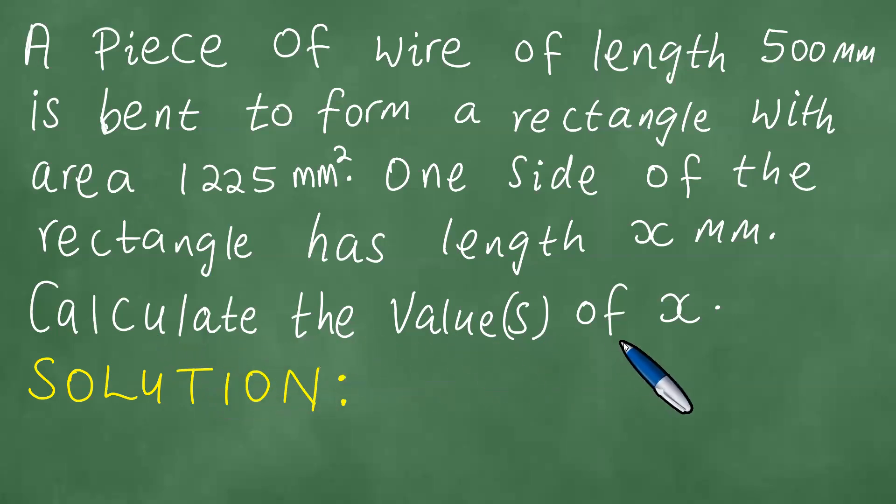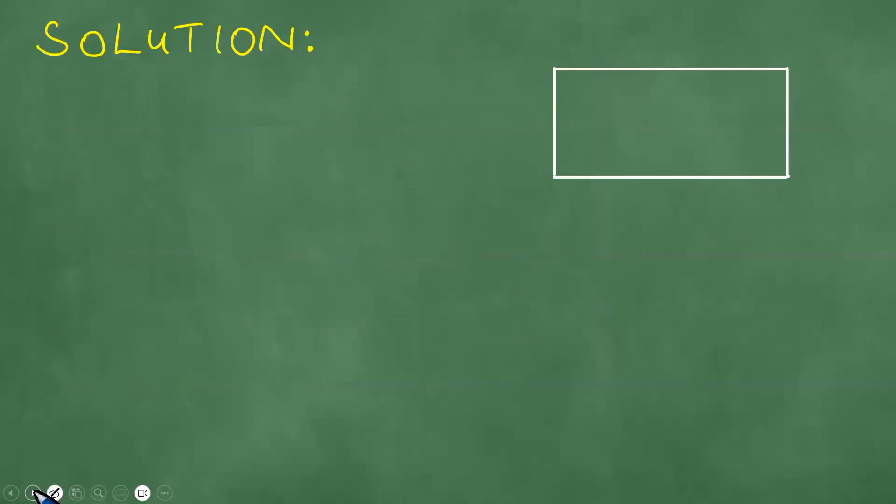Calculate the values of x. We present the solution to the problem and proceed as follows. First things first, we're able to see that this area here is 1225 square millimeters. This is x, and so now we can call this the length.